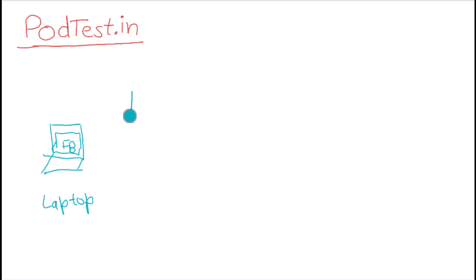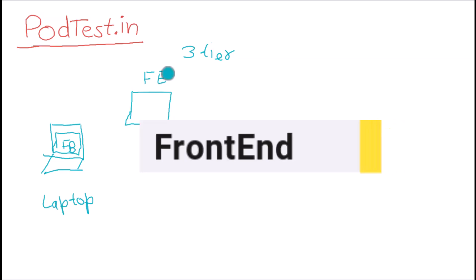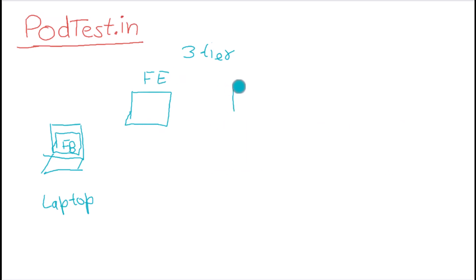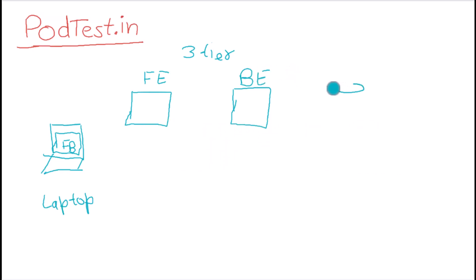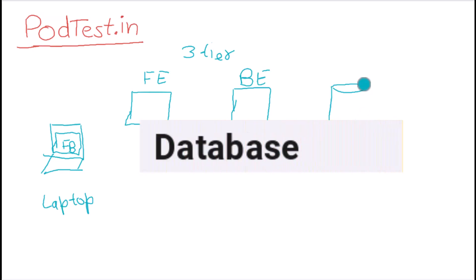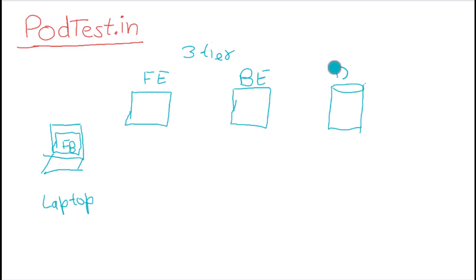Let's say Facebook has a three-tier architecture — we are just assuming this. If you look at the first block, that is the frontend. The second block would be the backend. And the last thing would be the database. Let's first understand what these three things are.